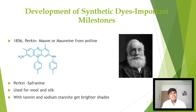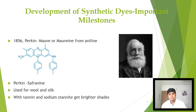Perkin also synthesized another dye, safranin. This dye was used for dyeing wool and silk. He also used mordants like tannin and sodium stannite to get a brighter shade.